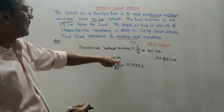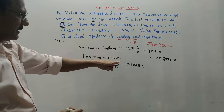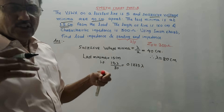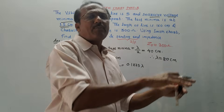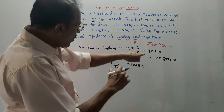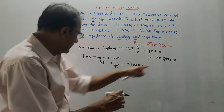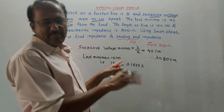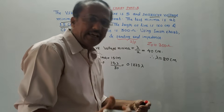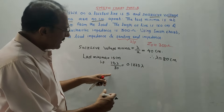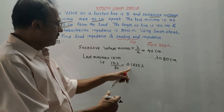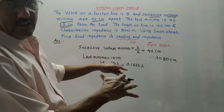The last minima is given at 15 centimeters. Length can also be expressed in terms of wavelength. To convert 15 cm into wavelength units, divide by lambda (which is 80 cm) and multiply by lambda notation: 15/80 × λ = 0.1875λ. The remaining part will be completed on the Smith chart.